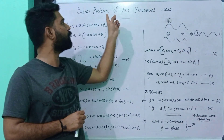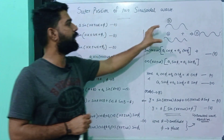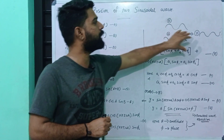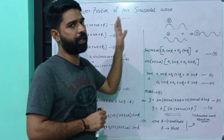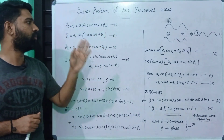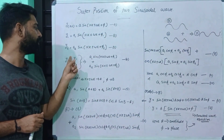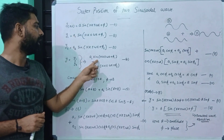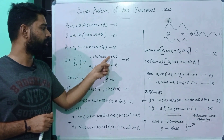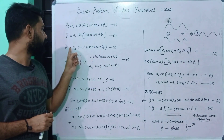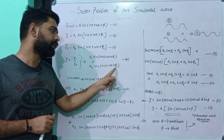We are going to consider two sinusoidal waves. y1 plus y2 gives the resultant wave y. We can find the value of y1 plus y2. That is equal to y. y is equal to y1 plus y2: A1 sin(kx ± ωt + φ1) plus A2 sin(kx ± ωt + φ2).